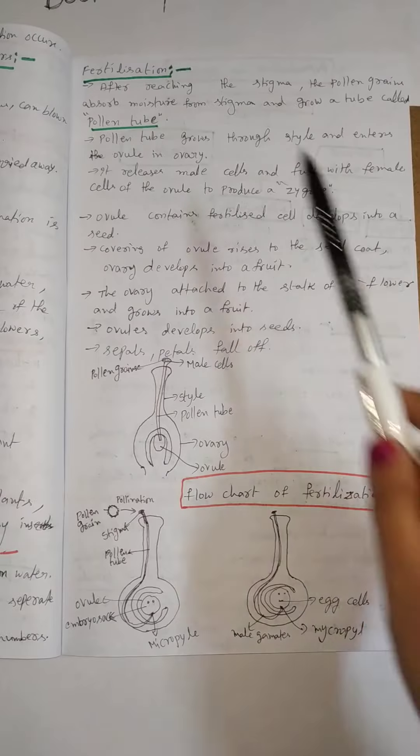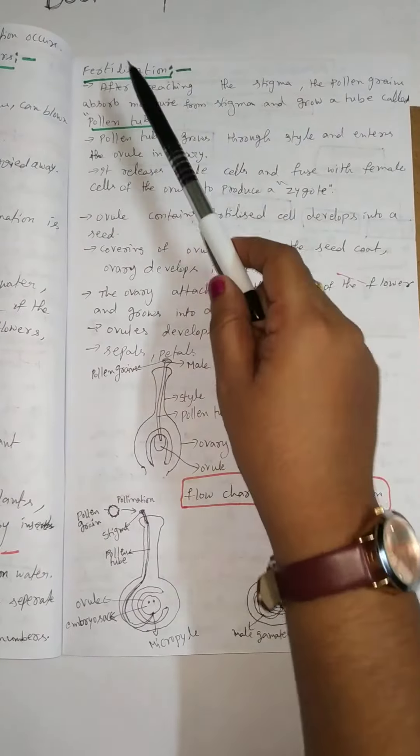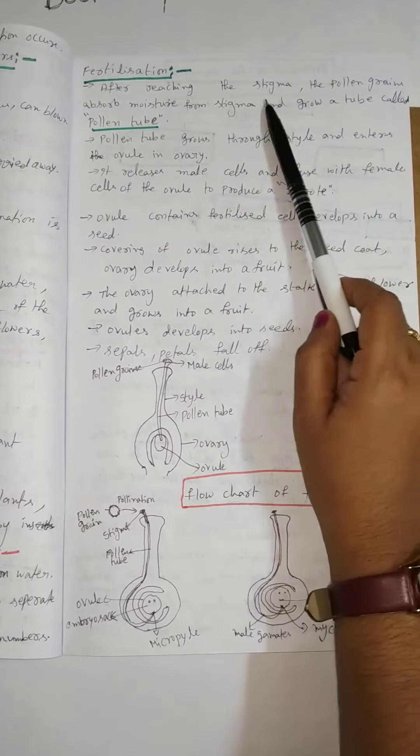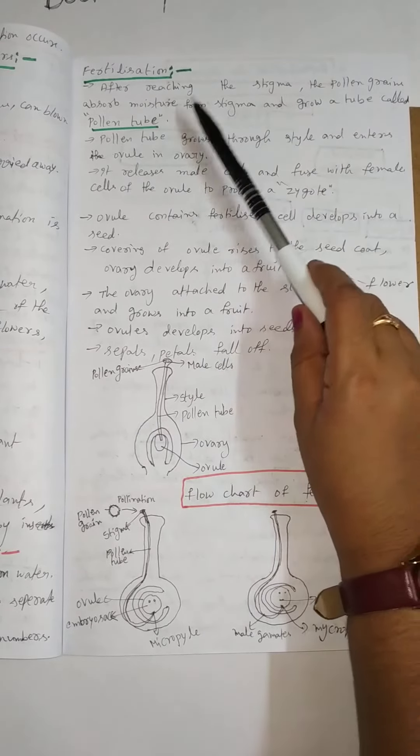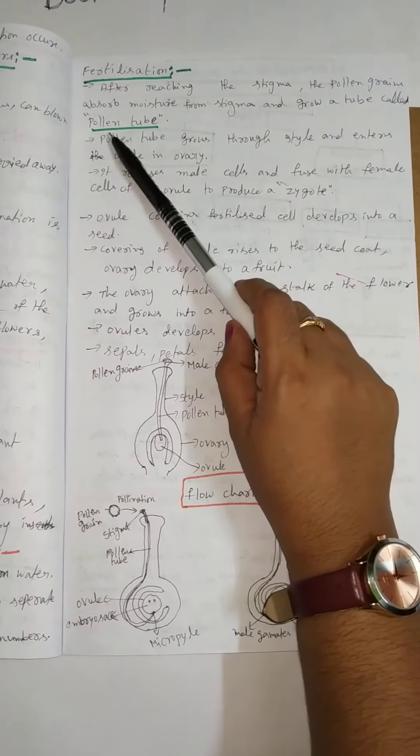In this class we will discuss the meaning of fertilization. After reaching the stigma, the pollen grains absorb moisture from the stigma and grow a tube. It is called pollen tube.